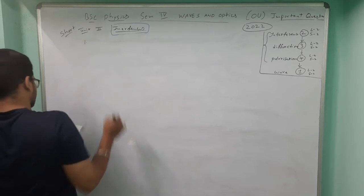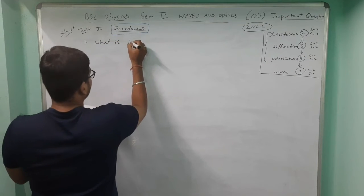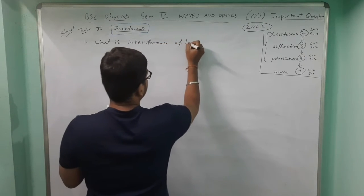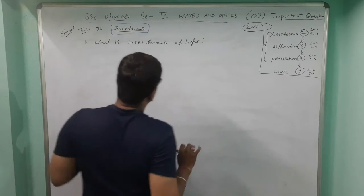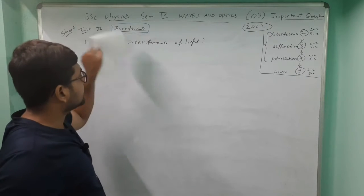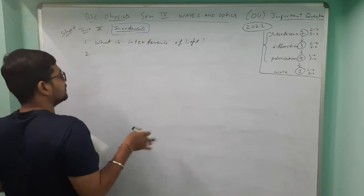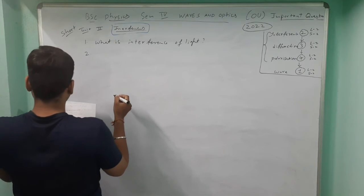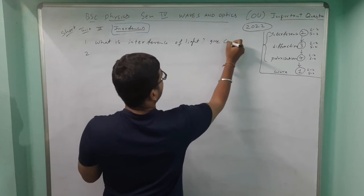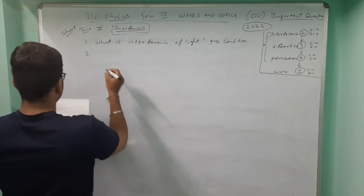Short answer question for unit two, first one: what is interference of light? You need to explain the basics — when waves overlap, interference occurs, and the condition is that the sources must be coherent. Second short answer question: explain Lloyd's mirror experiment.